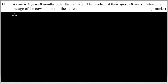Question number 11: We are told a cow is 4 years 8 months older than a heifer. The product of their ages is 8 years. Determine the age of the cow and that of the heifer.